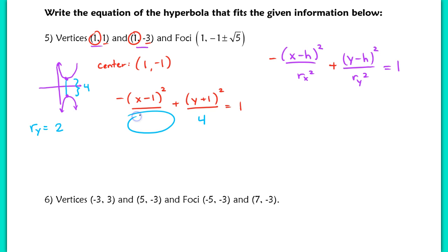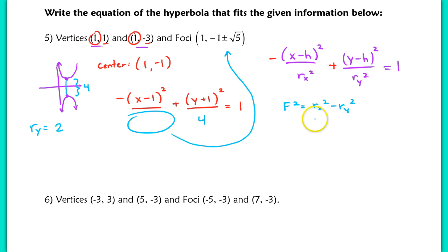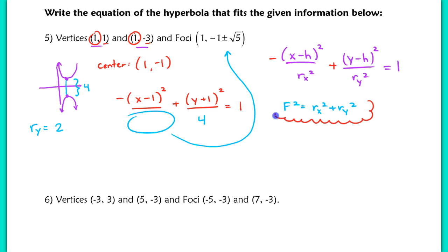All we have left is the r sub x squared value. We look at the foci given at the start of the problem. Whenever you're given foci — even for an ellipse — you use an equation relating the focal distance to r sub x and r sub y. For a hyperbola, it's f squared equals r sub x squared plus r sub y squared — a sum, not a difference like the ellipse. Make sure you note this in your notes. Right now we're missing the focal distance, so we need to find f.